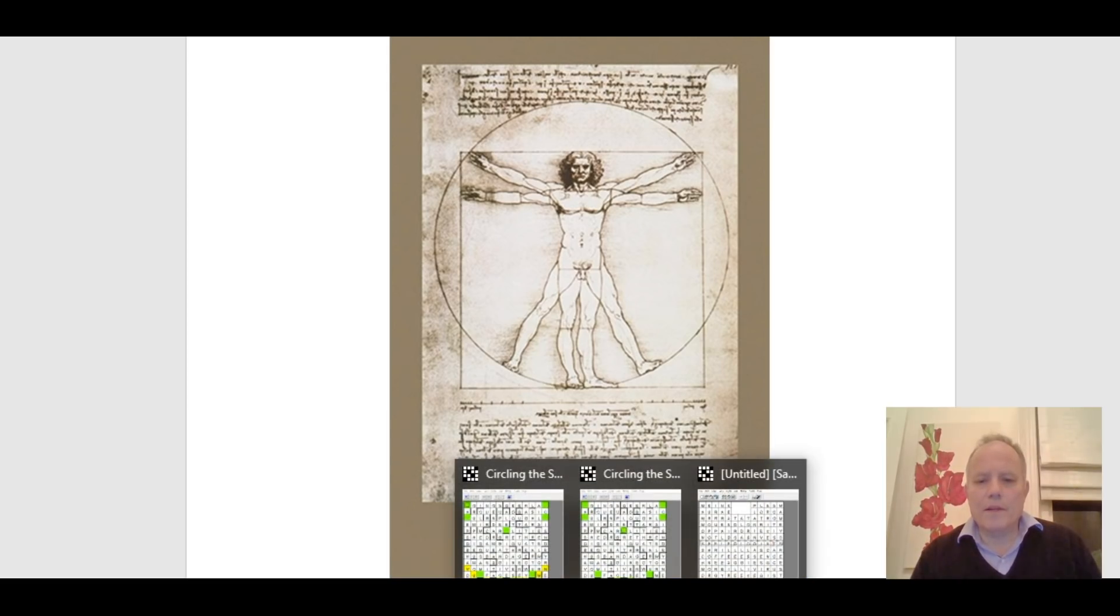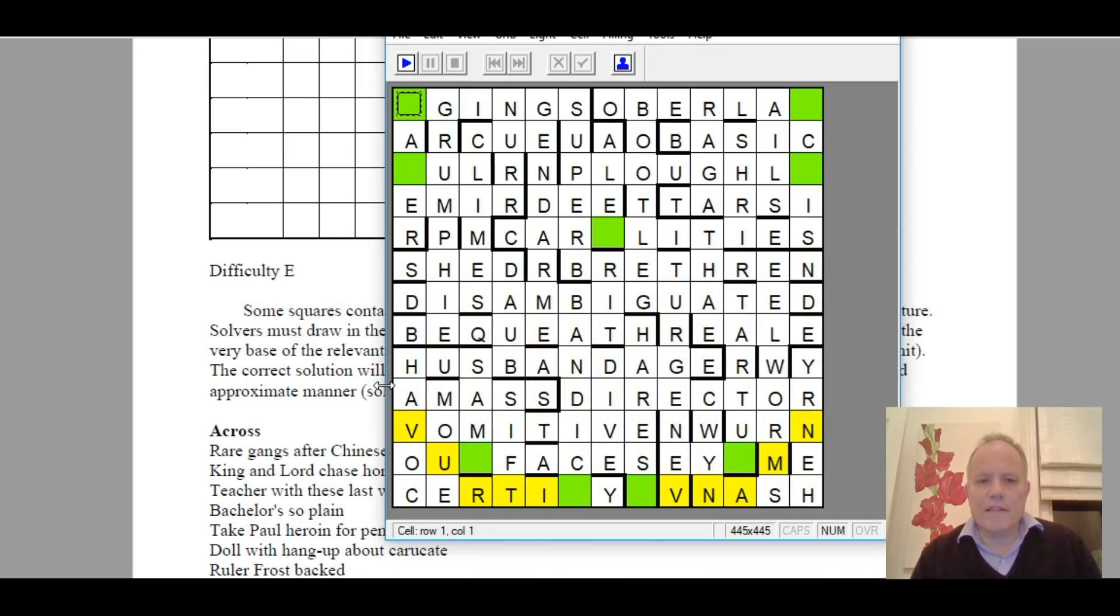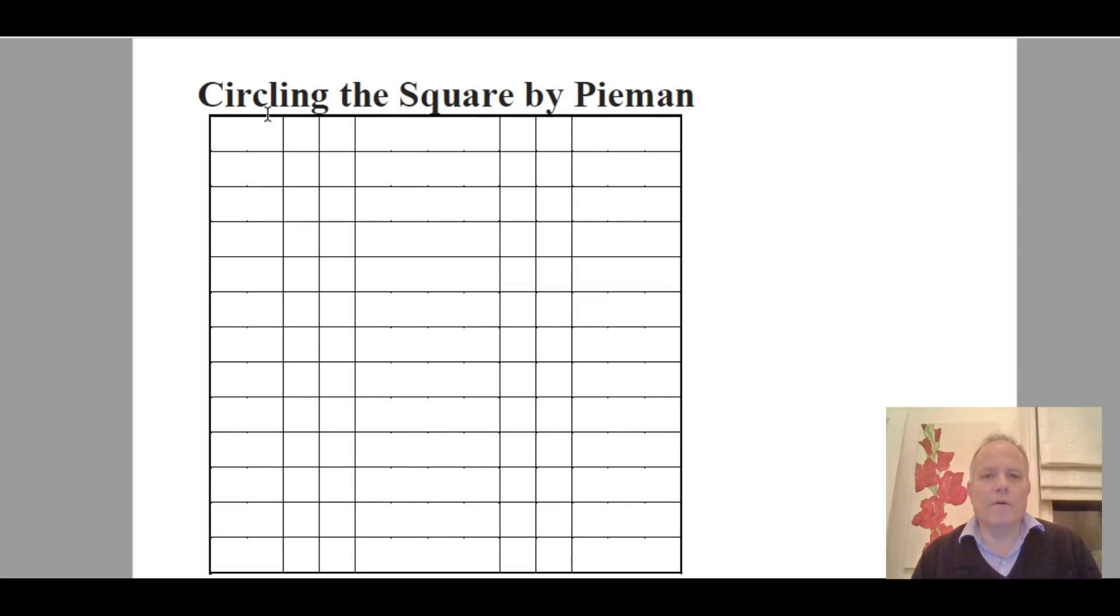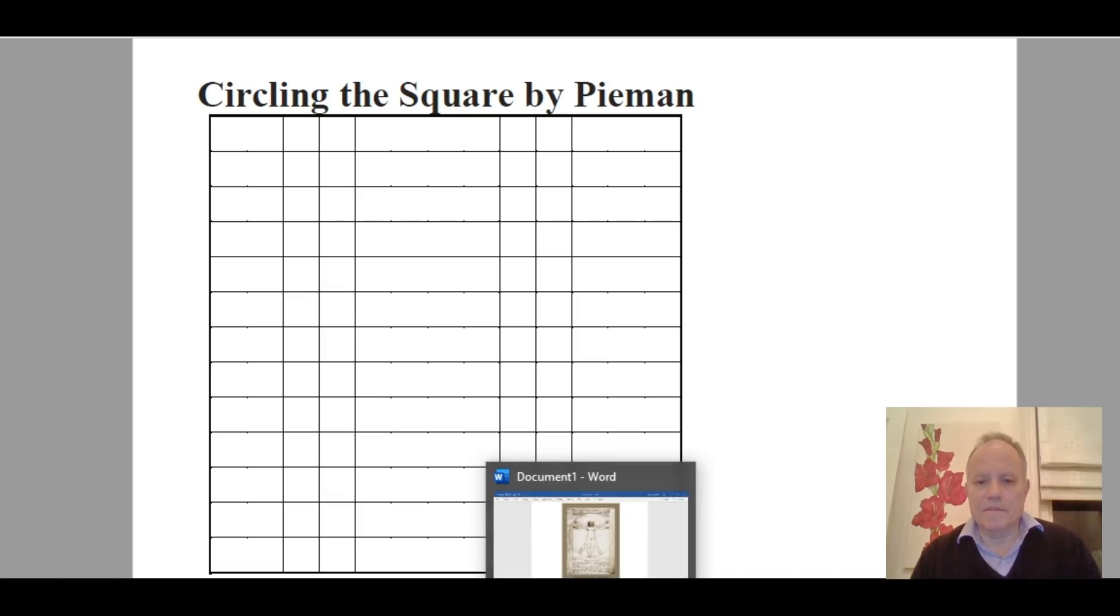So where are we going to find them? Well, what you have to do to understand that is go back to the original grid, which had this title on the top. And now suddenly, if you actually bother to draw the circle—and a lot of solvers only found out what was going on when they did draw the circle—you find that the title is so carefully positioned that the I from circling and the A from Pieman are in the exact places needed to make up the missing letters of the Vitruvian Man.